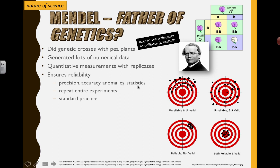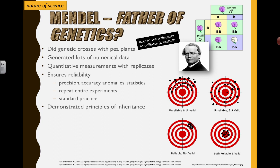Replication allows us to do statistical tests and we can repeat entire experiments. This has pretty much become standard practice in science. You can't publish a paper, become famous, or sell a drug unless somebody else can check your data and repeat your experiment. It's part of how science works.